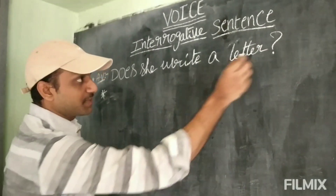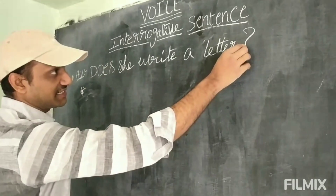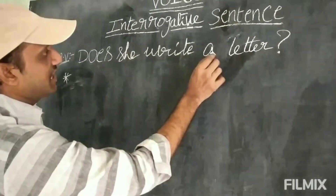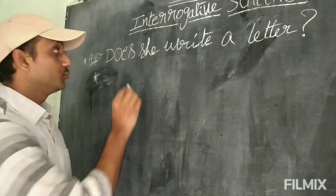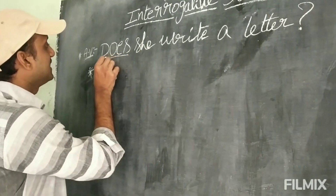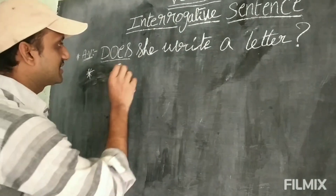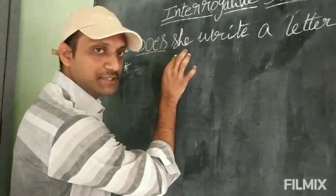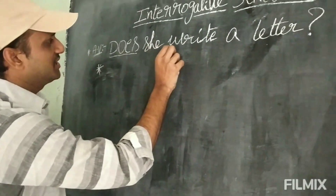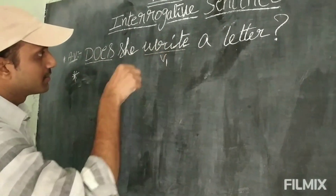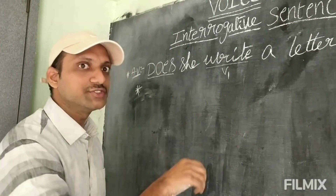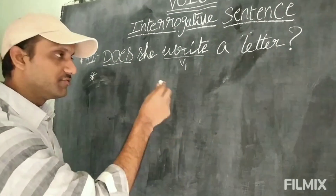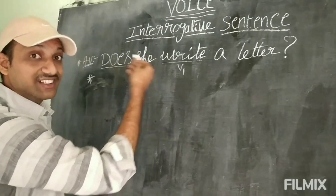What is the meaning of an interrogative sentence? By seeing a question mark, you have to decide that it is interrogative. For example: 'Does she write a letter?' First we have to observe which tense it is. By seeing 'does,' you simply decide it comes under simple present. In simple present, V1 is the verb form in the question.